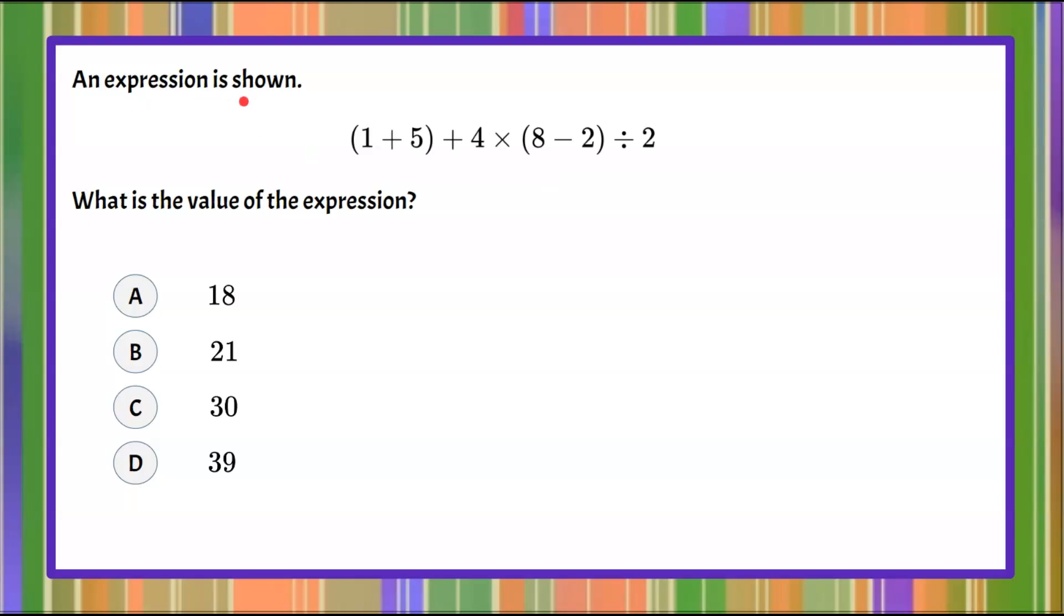We're given an expression which is shown: the quantity 1 plus 5, add 4, multiply by the quantity 8 subtract 2, and then divide by 2. We're asked what is the value of this expression and we're given four answer choices.